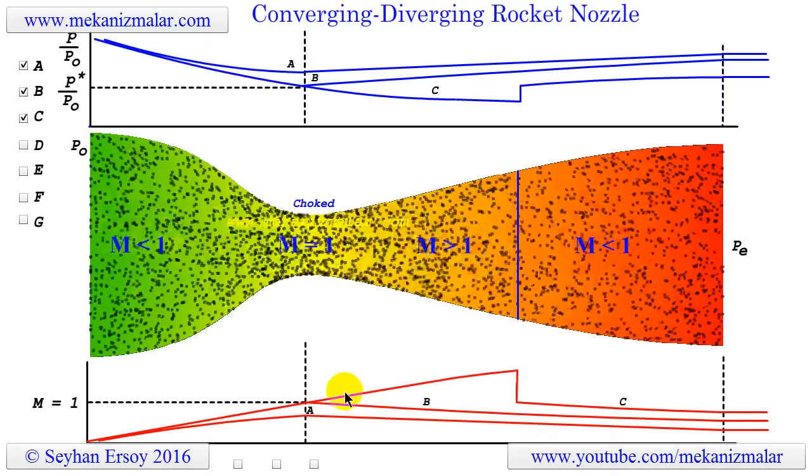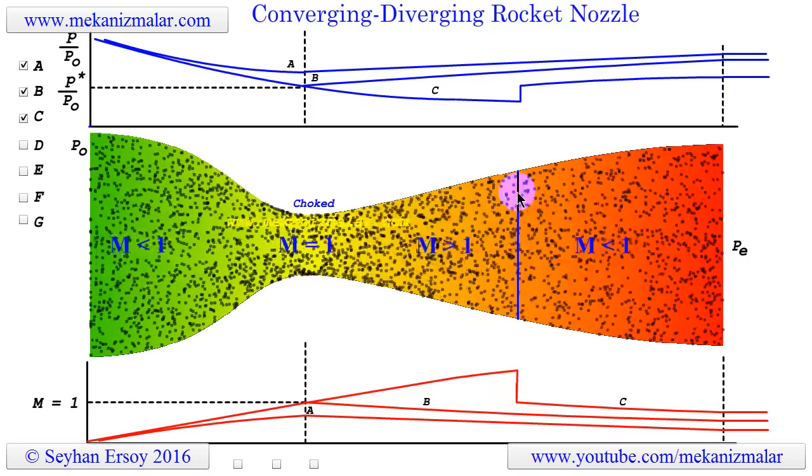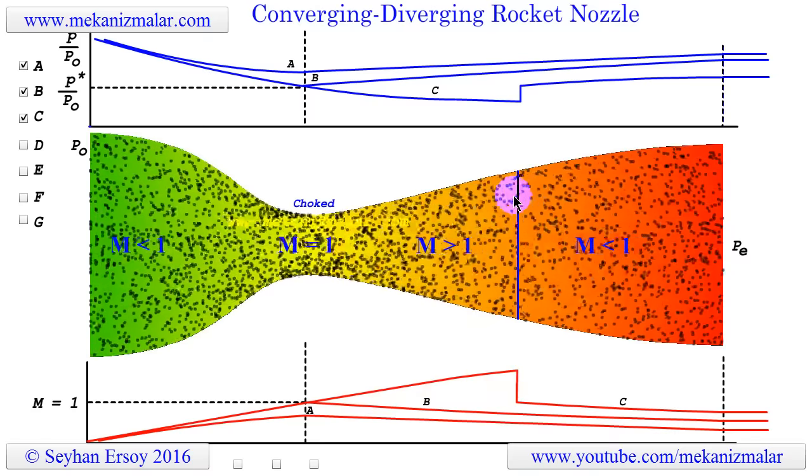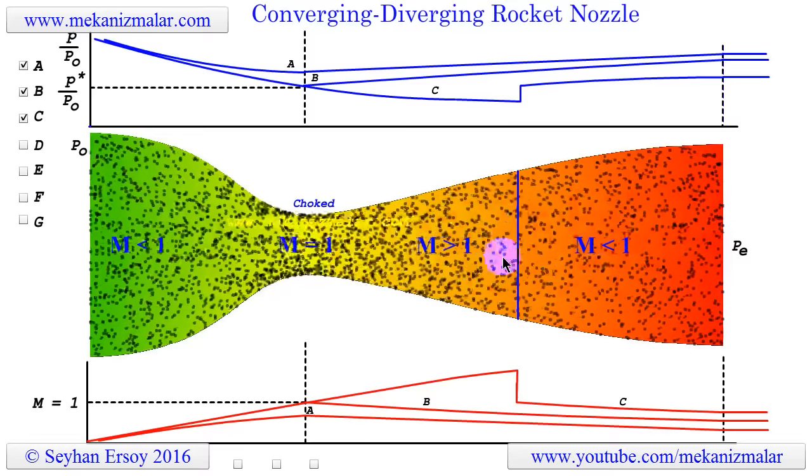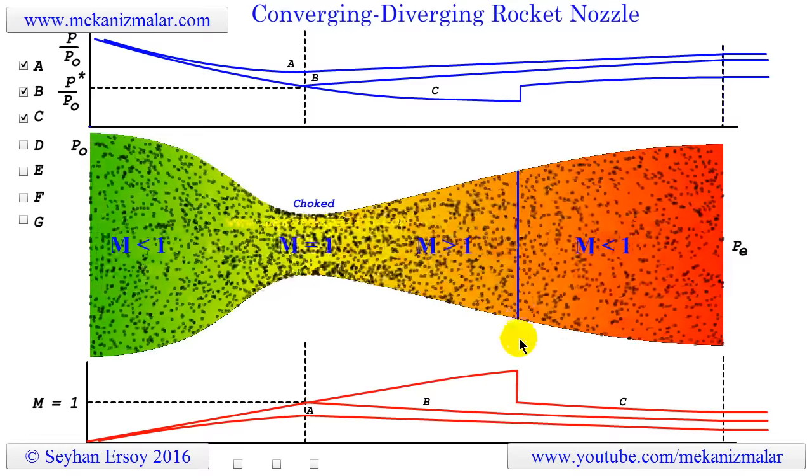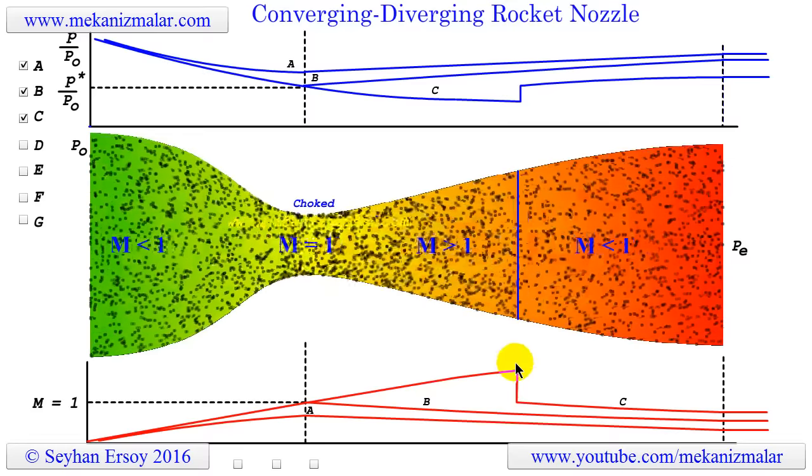But, the exit pressure will not be low enough to sustain this increase in speed. Somewhere in the diverging nozzle, a normal shock wave will be created, and the flow speed behind this shock wave will be subsonic.